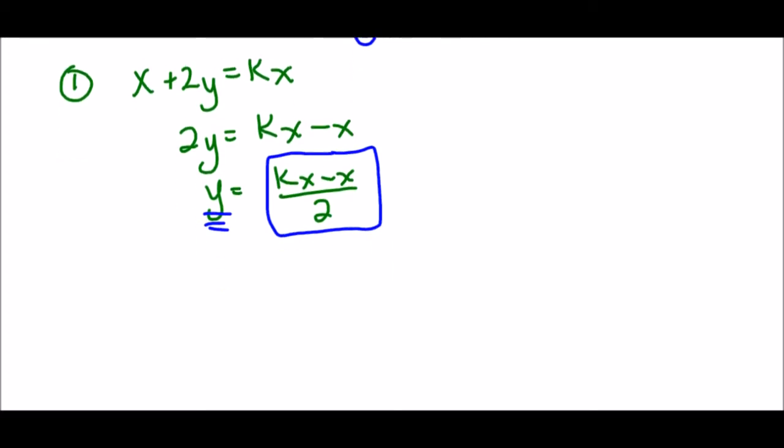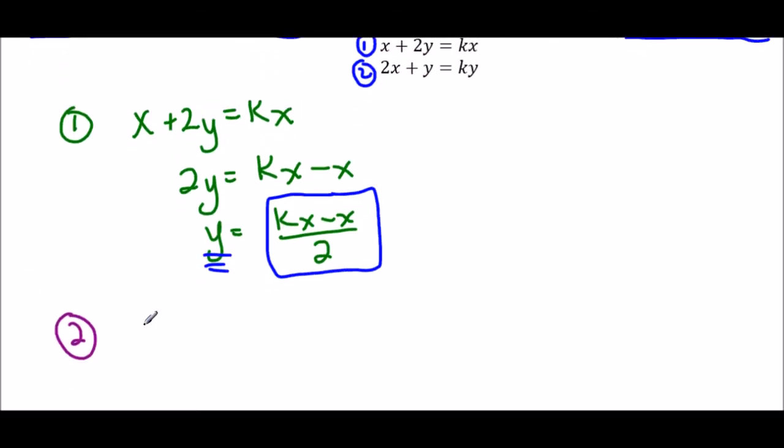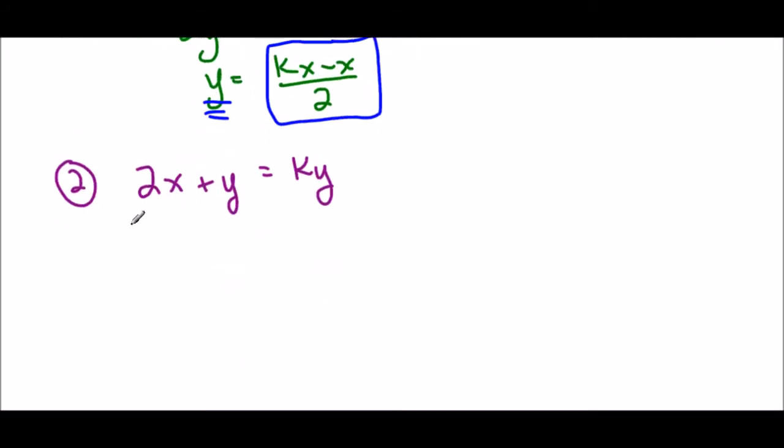And so because I did it using the first equation, I'm now going to take the second equation, and I'm going to substitute that in. So the second equation says 2x plus y equals ky, but now I don't want to use y anymore. I want to do a substitution. So wherever I see y, I need to substitute that bunch of math.